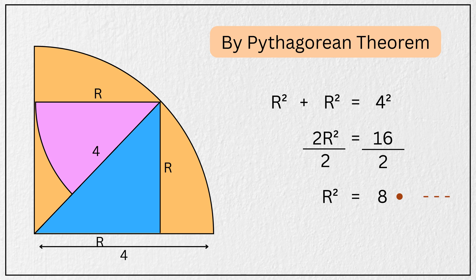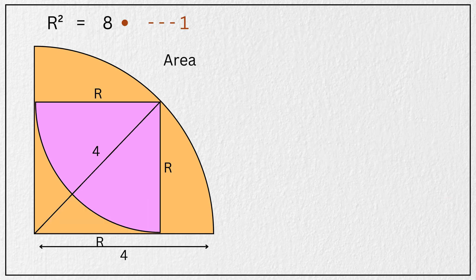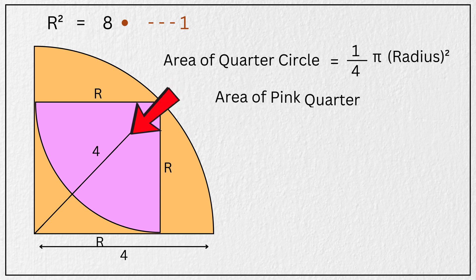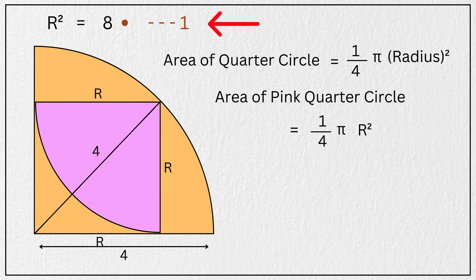Let us mark this as equation 1. The area of a quarter circle is given by the formula one fourth times π times the radius squared. So the area of this pink quarter circle will be equal to one fourth times π times R squared. But R squared equals 8 from equation 1.